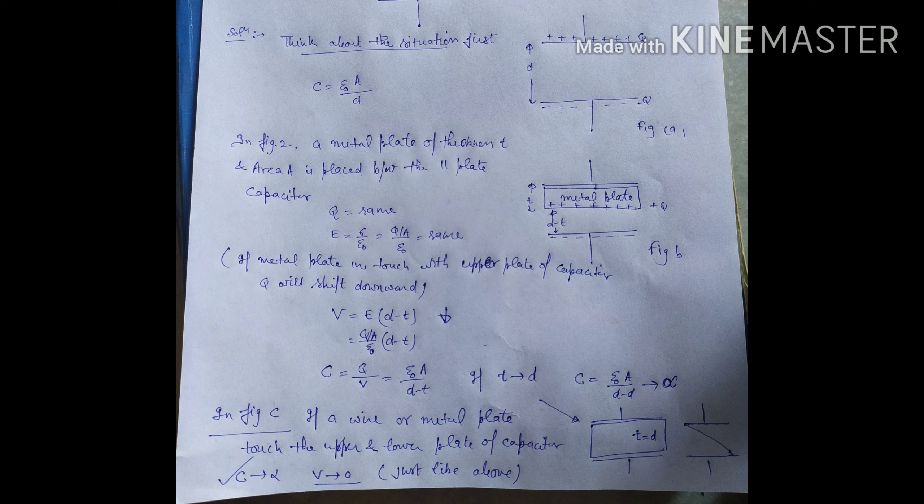If T approaches D, filling the whole space between the two plates, C becomes infinity. In figure C, if a wire or metal plate touches both the upper and lower plates of the capacitor, C will be infinity and the potential will be zero.